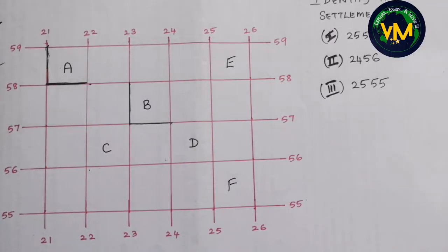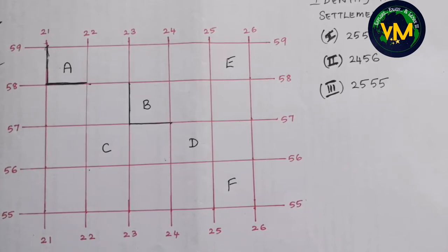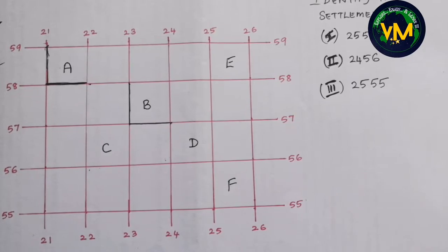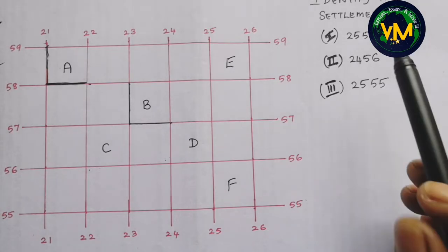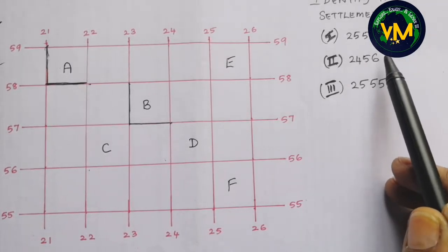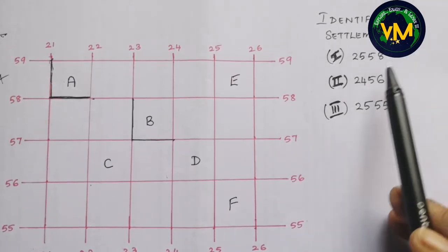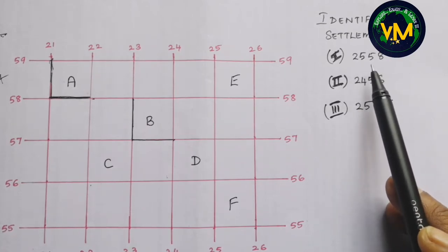Other than finding the four-figure grid reference, you will also be asked to find the grid in which a particular place is present. Or they will give you the grid number and ask you to identify two natural features, two man-made features, a settlement pattern, or something like that. So we need to know how to find the grid when the grid number is given. We are going to identify the settlement in 2558.